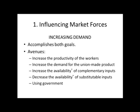If the union did something to increase the availability of complementary inputs — the things that go along with labor in production — by lobbying for policies that make those things more available, or to decrease the availability of substitutable inputs, anything that changes how much it costs or whether it's legal. So if there's a substitutable input like some machinery or capital, and policies are put in place that make that hard to get, then we can increase the demand for labor.